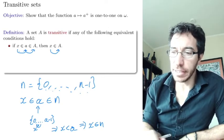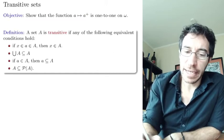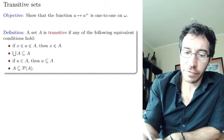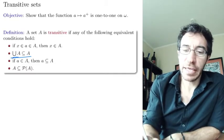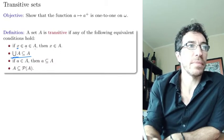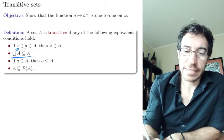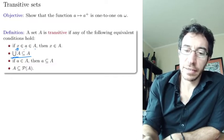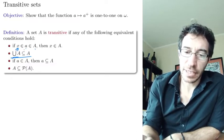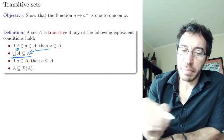This definition can be stated in a few equivalent ways. First: the union of A is a subset of A. Remember, x belongs to the union of A if it belongs to something that belongs to A. So saying x belongs to the union of A and concluding x belongs to A is the same condition. All members of members of A are members of A.